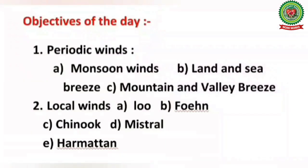The objectives we are going to study today are: number 1, periodic winds, in which we will discuss monsoon winds, land and sea breeze, and mountain and valley breeze; and number 2, local winds — Loo, Fohan, Chinook, Mistral, and Harmatan.